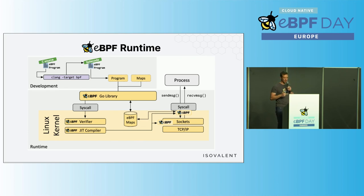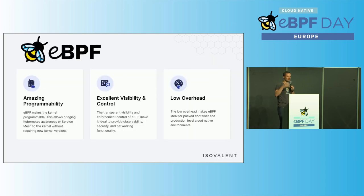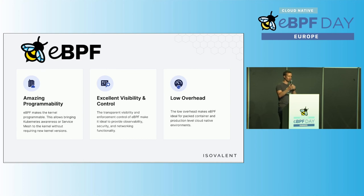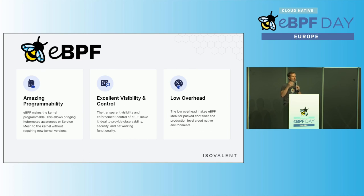Then we have eBPF maps — data structures and a great way to extract visibility from kernel space into user space, including hash tables and maps. To summarize: eBPF gives us amazing programmability, leading to innovation very similar to what JavaScript has done to the browser. We have excellent visibility and control as a cornerstone — deeper visibility and more control into lower levels of the operating system and inside applications. There is also the massively low overhead of eBPF, enabling new observability, networking, and service mesh use cases where it wasn't possible before.